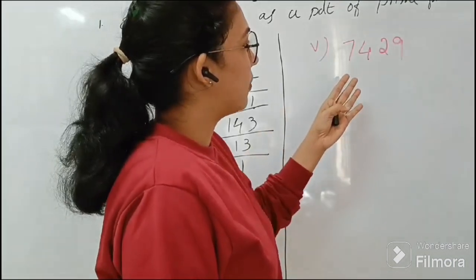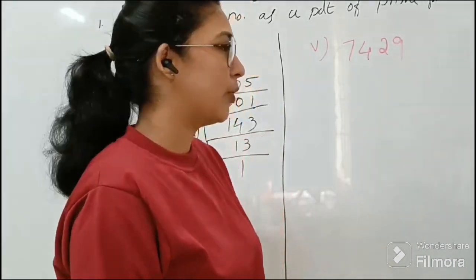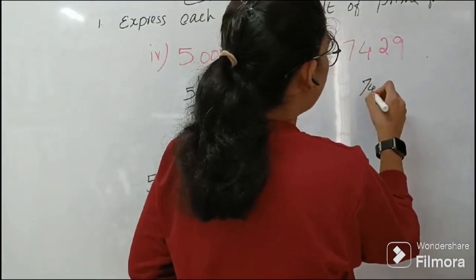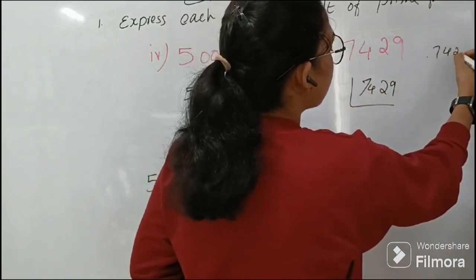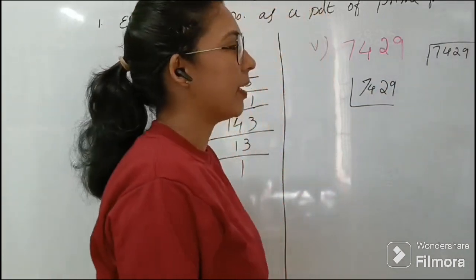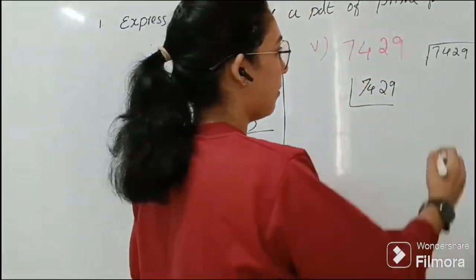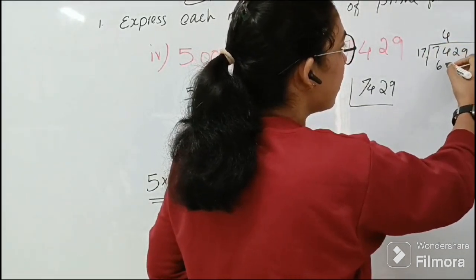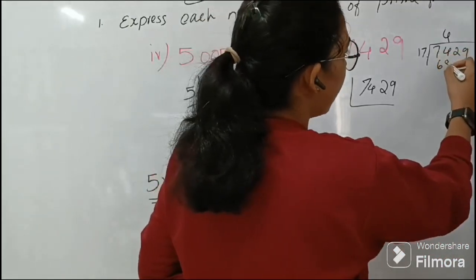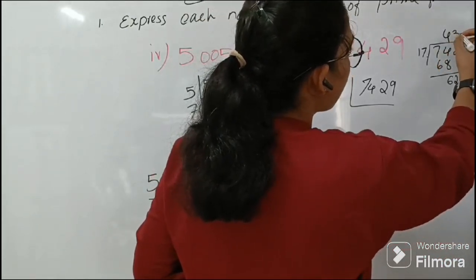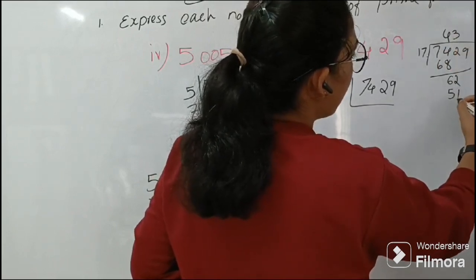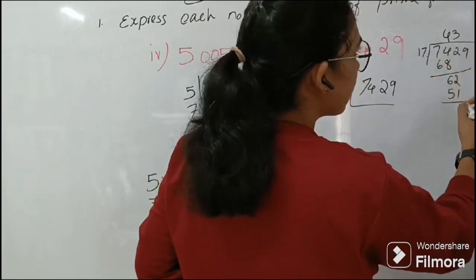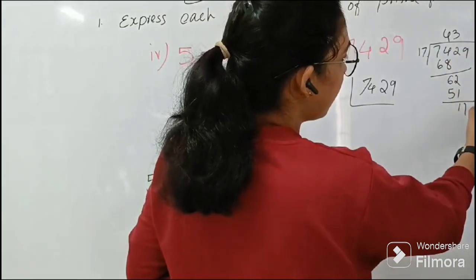And the last one is 7429. Actually this is a difficult one. No matter, let's do it. So 17 can be completely divisible in this number. So 17, 437. 17 times 4 is 68, and 3 times that is 51. So in 17 we get 437.